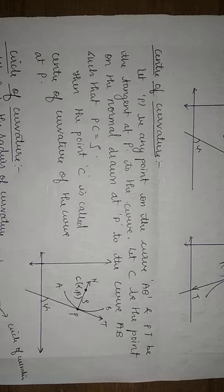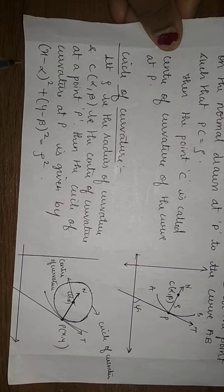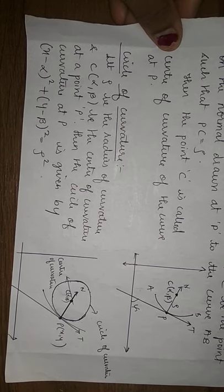Now I will define the circle of curvature. Let rho be the radius of curvature and let (alpha, beta) be the center of curvature at a point P. Then the circle of curvature at point P is given by the equation: x minus alpha, whole squared, plus y minus beta, whole squared, equals rho squared. This follows from the standard circle equation x minus h whole squared plus y minus k whole squared equals r squared.